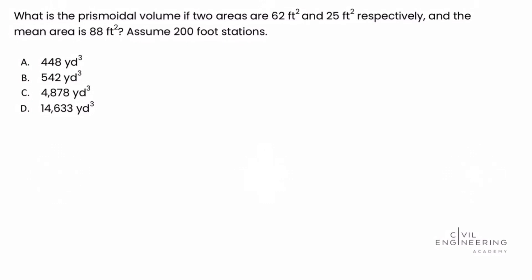The question asks, what is the prismoidal volume if two areas are 62 square feet and 25 square feet respectively and the mean area is 88 square feet, assume 200 foot sections.